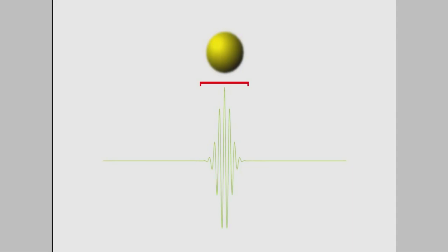But quantum mechanics tells us that the wave function doesn't stop where we see the edge of the particle. Instead, it continues forever, although it's very small. That means that we're extremely unlikely to see the particle way over here, but it's still very remotely possible.